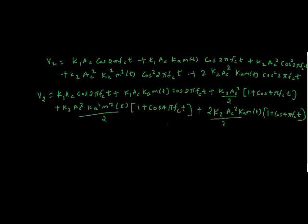We know that v1 is equal to ac(1 plus ka m of t)cos(2 pi fc t) and that AM signal I have passed it to the non-linear device. We all know that the characteristic of a non-linear device is that the output of that device will be v2 is equal to k1 v1 plus k2 v1 square. I have simplified that. I will get this complete equation.